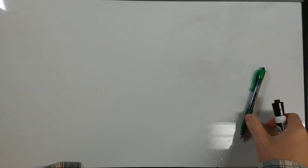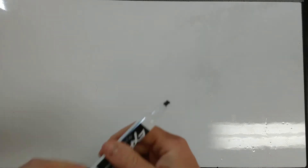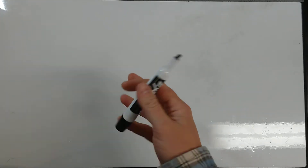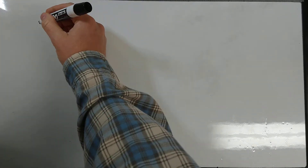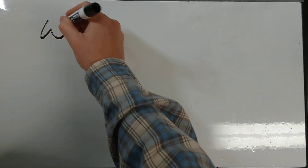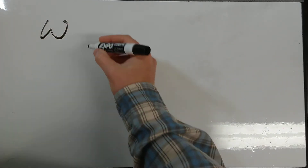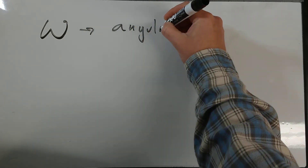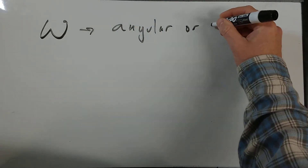All right, AP Physics C. I was making the answer key for your worksheet three, and there's a couple things I just want to go over quick. This idea of angular velocity and angular frequency — the symbol we use for it is omega, and that means angular or rotational.